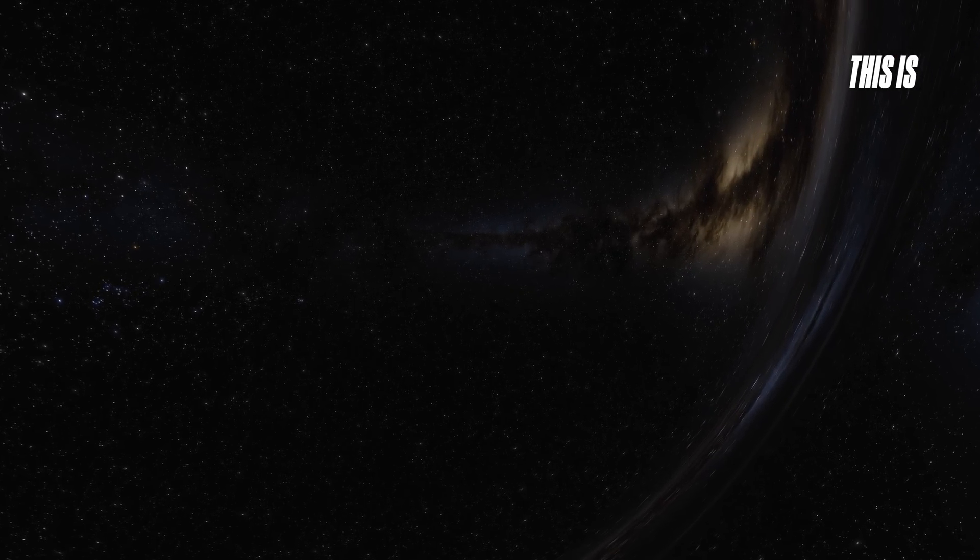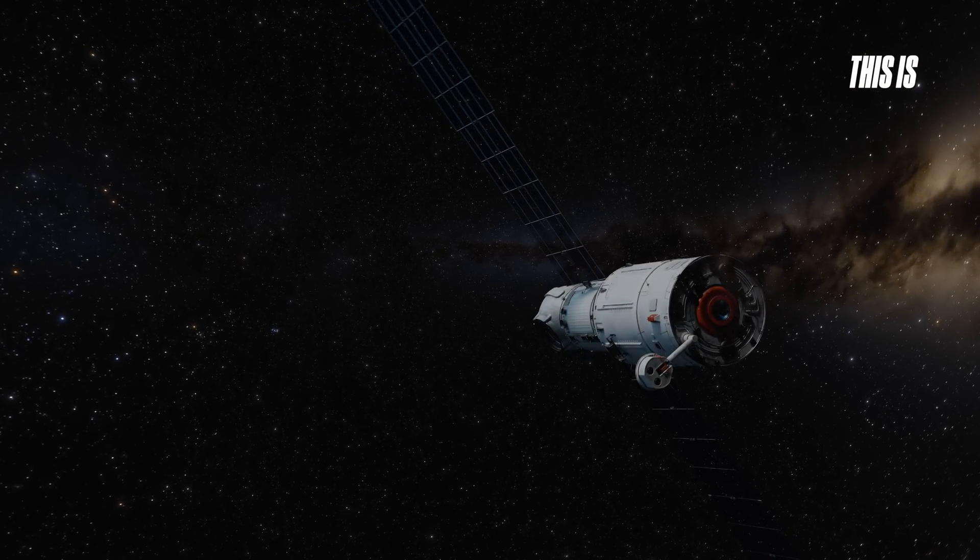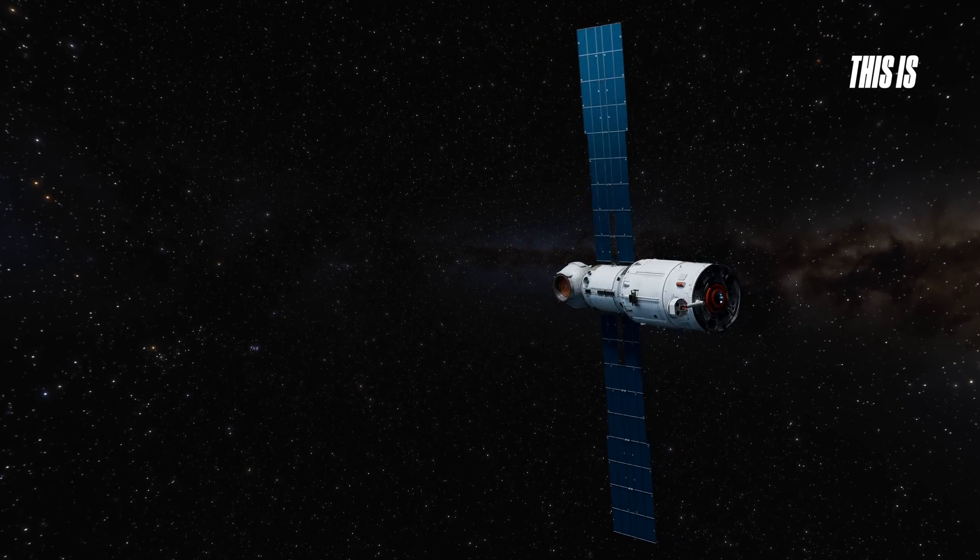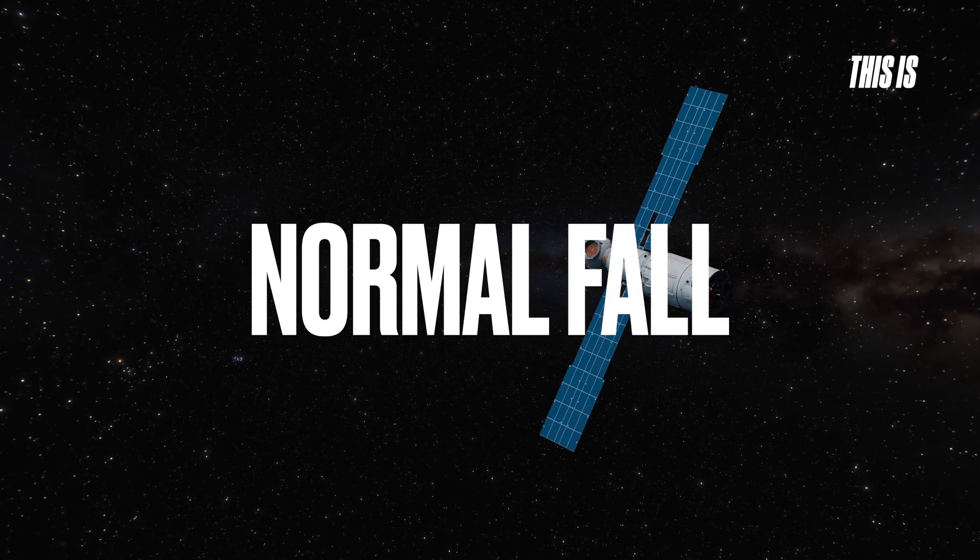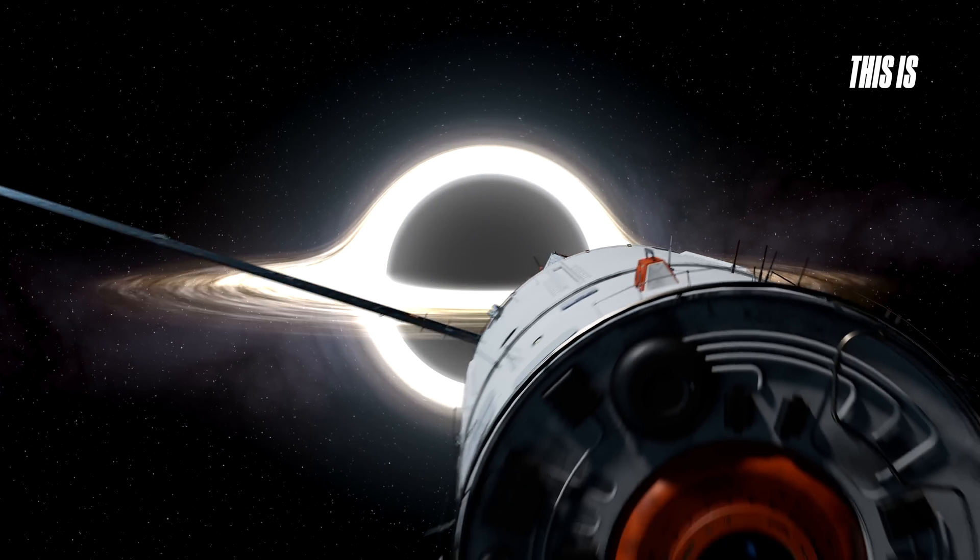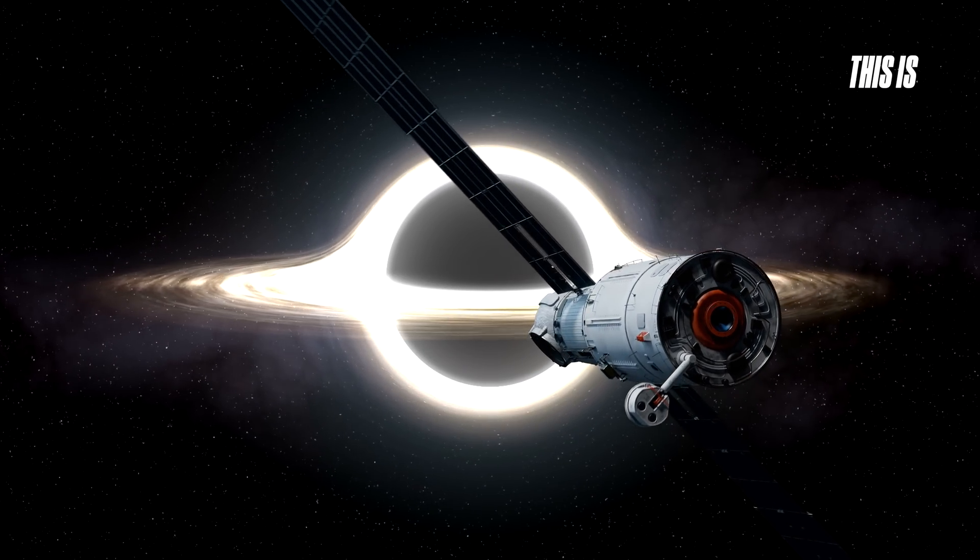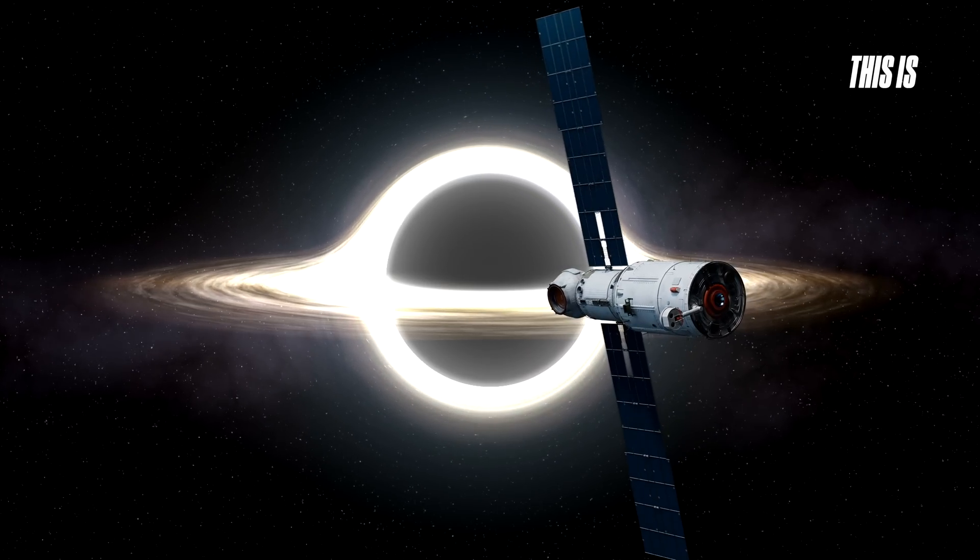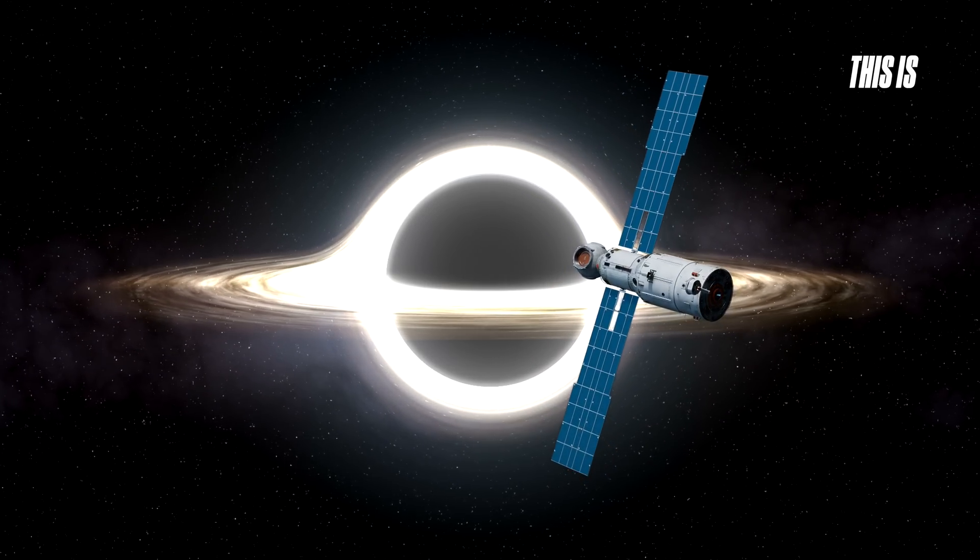If you had infinitely precise instruments and watched an object falling into a black hole, you would observe several distinct phases. At first, the object would fall at a normal speed, approaching the black hole. Its motion would appear natural, similar to how things fall on Earth.